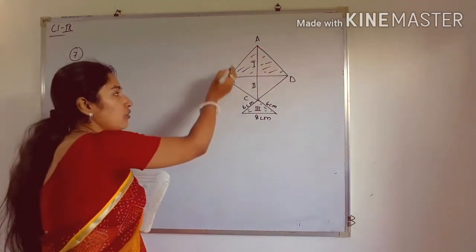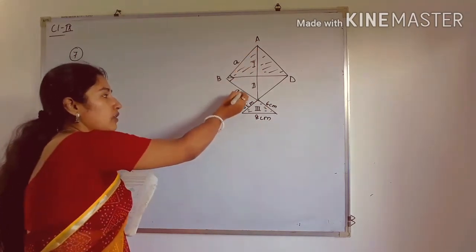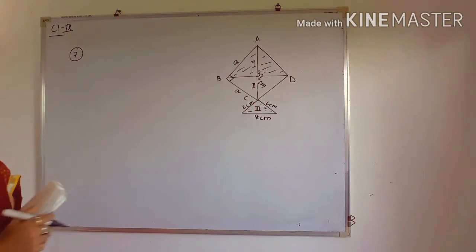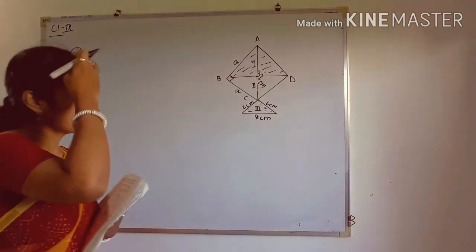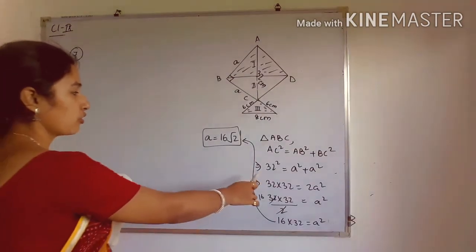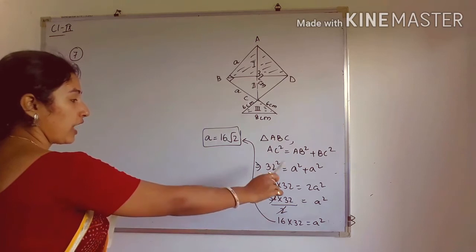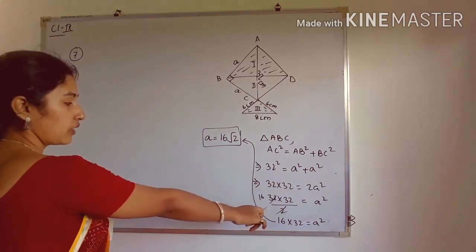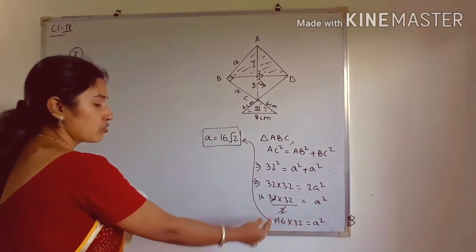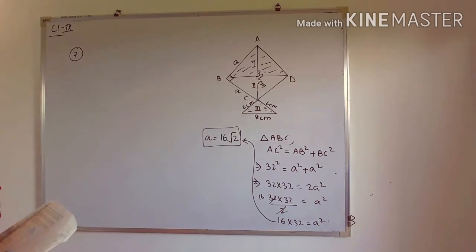To find the side of the square, we use the Pythagoras theorem. Since each angle in a square is 90°, the diagonal AC = 32 cm is the hypotenuse of triangle ABC, where AB = BC = A (the side). So AC² = AB² + BC² → 32² = 2A² → A² = 1024/2 = 512 → A = √512 = 16√2 cm.